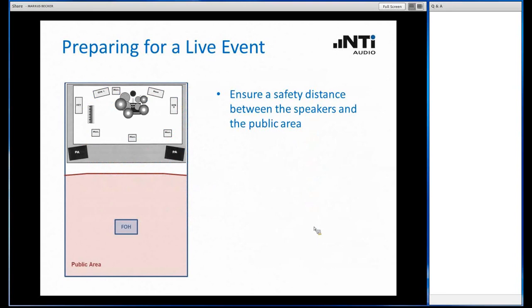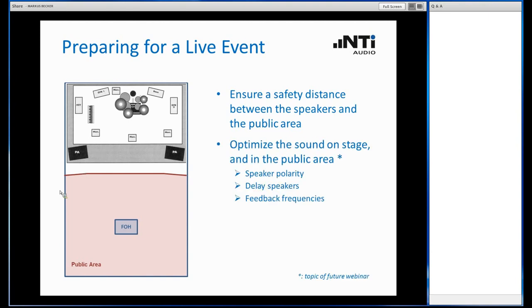Now we are coming close to preparing a live event. What do we have to do? First, when we set up our PA system, we have to make sure that there is a safety distance between the line arrays, for instance, and the zone where the public is located. Secondly, we have to take care that the sound on our stage for the musicians is adjusted properly, and of course also for the public itself. This includes verifying the polarity of the speakers, adjusting the delay of delay speakers if there are any. If you have a large area that has to be covered, you need delay speakers that have to be adjusted properly. Cancelling the feedback frequencies and so on. This is a wide field with many things to be done, and we will cover that in a future webinar.